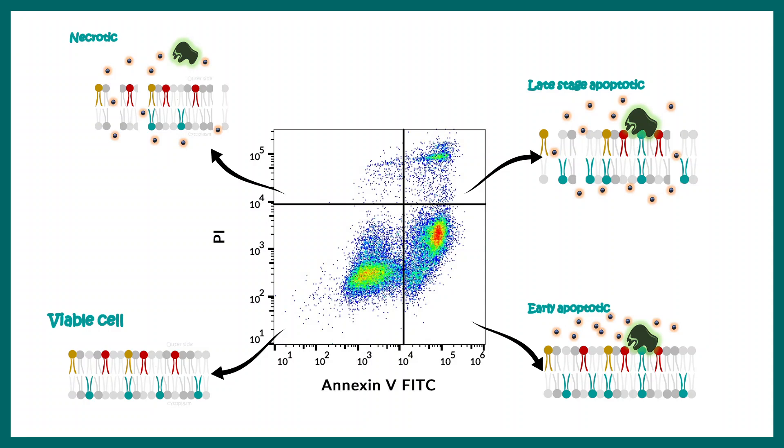When we have a control cell and a drug-treated cell, we can understand how much apoptosis has taken place, and also how many cells are at early stage versus late stage of apoptosis. This can give us a sense of the efficacy of the drug if it is meant to kill the cells. So that is how an Annexin-PI assay works.